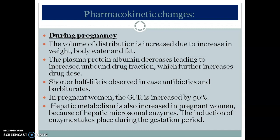Pharmacokinetic changes during pregnancy include: increased volume of distribution due to increased weight, body water, and fat content, along with more adipose tissue. Plasma protein albumin decreases, leading to an increased unbound drug fraction, which further increases the effective drug dose. Shorter half-life is observed for antibiotics and barbiturates during pregnancy, meaning the drug action is faster.